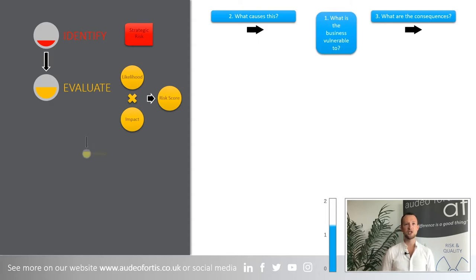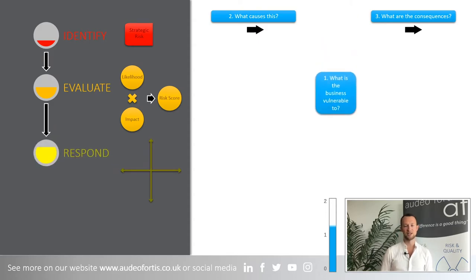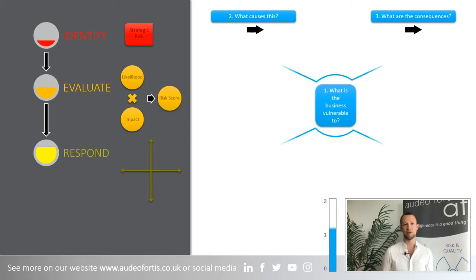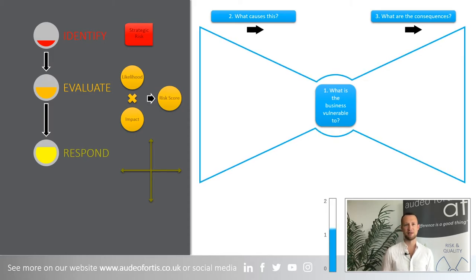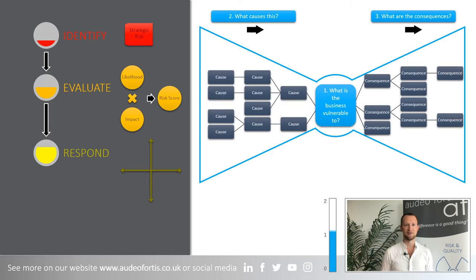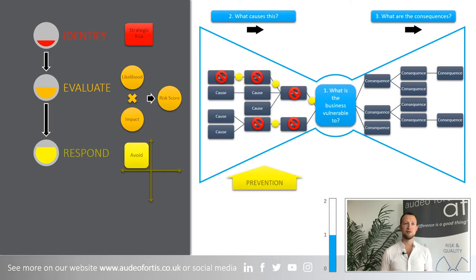The third tip is to respond to those risks depending upon your appetite. A common approach is the bowtie method — map the causes and consequences when you identified the risk. Plotting out each risk helps you assess where you can either prevent a root cause from happening, known as avoidance, or instead reduce the impact of the consequences, known as mitigation.